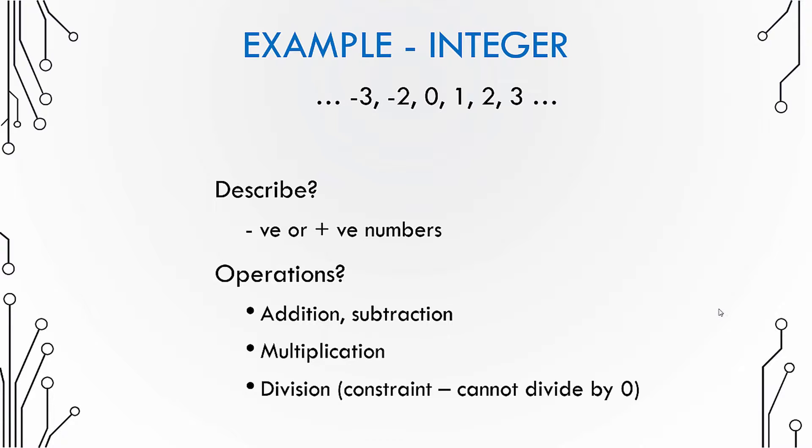So you now know what's an abstract data type. It's something that describes the type of data, describes the properties of the data and it describes what operations you can perform on a data. It does not talk about how to perform these operations or how to implement these operations or how to implement the properties of this data.